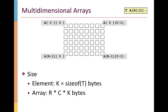The elements of the array have the size of the fundamental data type. If T is an integer, the size K equals 4 bytes. These values are stored contiguously in memory, so the total size of the array is the number of rows times the number of columns times the number of bytes per element — R times C times K.